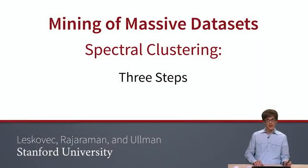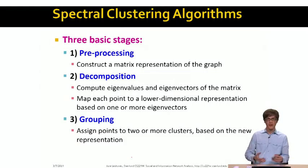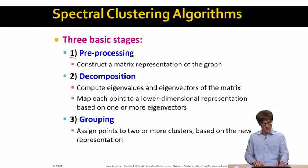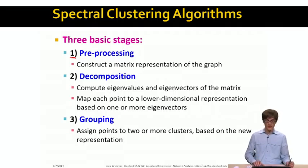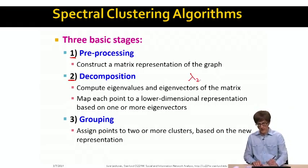Let me quickly summarize what we have learned so far. If you want to apply spectral graph partitioning to find two clusters in a given graph, there are three steps we have to go through. In the first step, we do what is called preprocessing, where we construct a matrix representation of a graph. In the second step, we compute the eigenvalue decomposition by identifying eigenvalues and eigenvectors. In particular, we are interested in the second smallest eigenvalue lambda 2 and the corresponding eigenvector x.